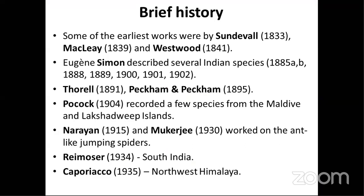We'll skim through the history of salticid taxonomy and diversity studies in India. Some of the earliest works: the first was probably by Savigny in 1833, who described a species from East Bengal. Then in 1839, Mekli described another ant-mimicking species from Bengal. In 1841, Westwood described another Myrmarachne species from North India, though he did not mention the exact location.